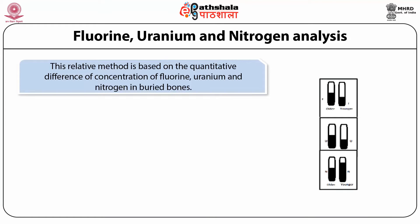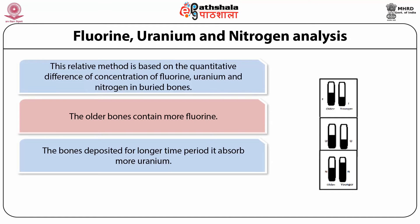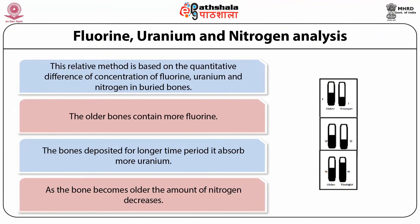Fluorine, uranium, and nitrogen analysis is a relative method based on quantitative differences in the concentration of fluorine, uranium, and nitrogen in buried bones. Older bones contain more fluorine compared to newer bones. Bones deposited for a longer period absorb more uranium compared to bones deposited for a shorter time. In nitrogen analysis, as the bone becomes older the amount of nitrogen decreases. The famous Piltdown problem was solved by the fluorine method — older bones had higher fluorine content.